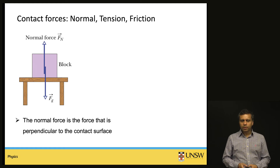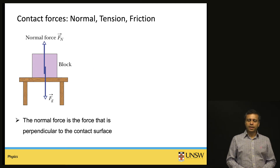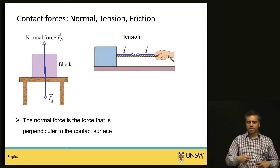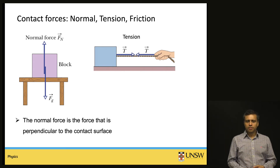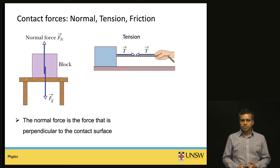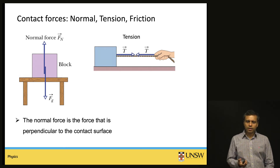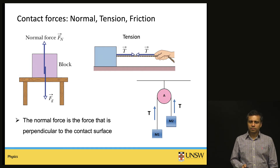Another type of contact force is tension. If you attach a rope to an object and pull the rope, the rope becomes taut and there is a tension in the rope, labeled as T. An example is a pulley with two masses — there is a tension force acting in the rope.